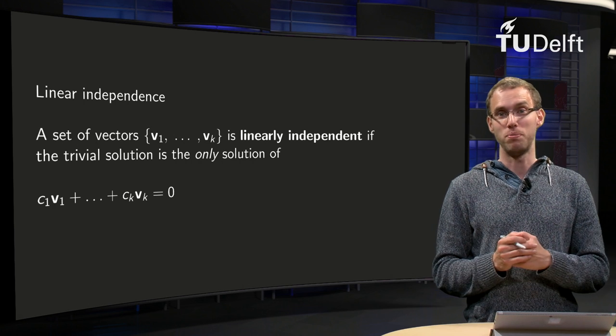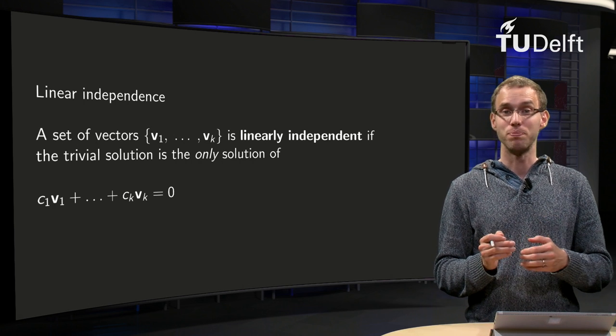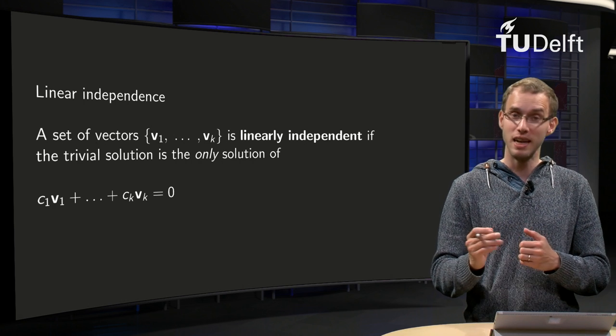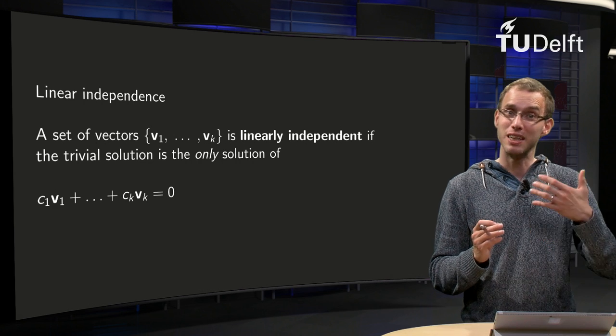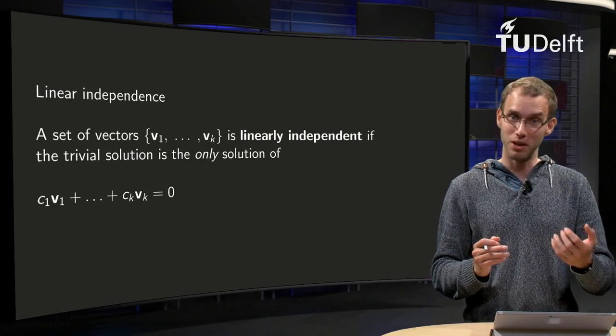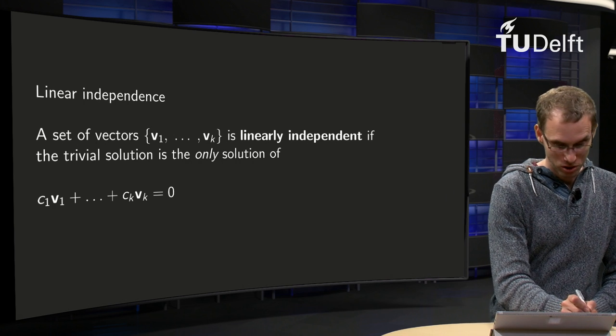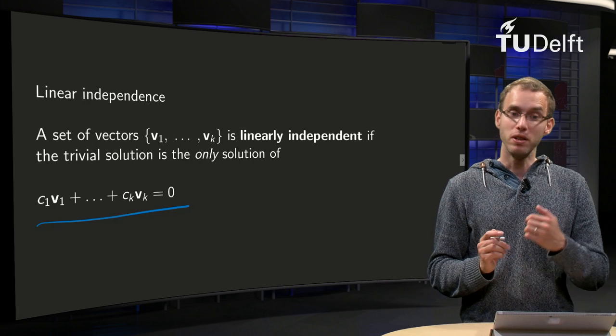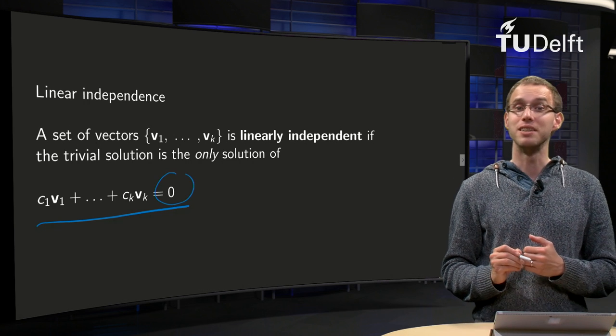For a general vector space it works exactly the same. The set of vectors v1 up to vk is independent if and only if the equation c1v1 plus up to ckvk equals zero only has the trivial solution. So that is the same equation as we are used to. But be aware of the zero over here on the right hand side.